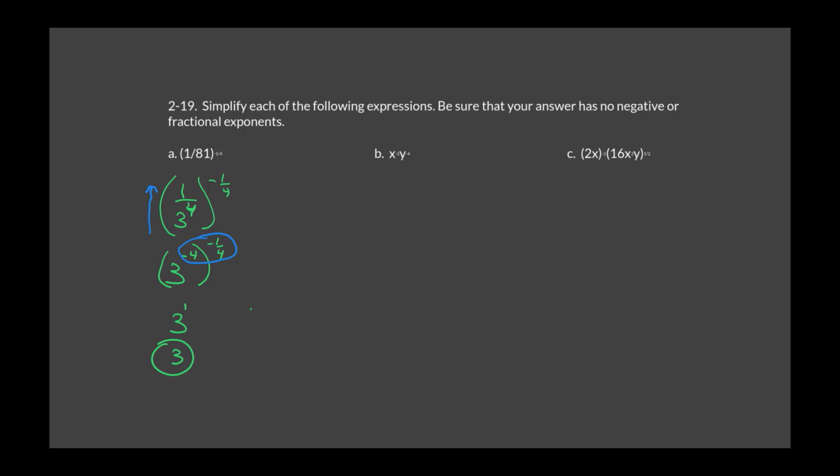For part B, move X to the negative 2 and Y to the negative 4 down into the denominator, which changes their signs to positive. So the result is 1 over (X squared Y to the fourth). That meets the instructions — there's a fraction in the answer but no fractional exponent and no negative exponent.